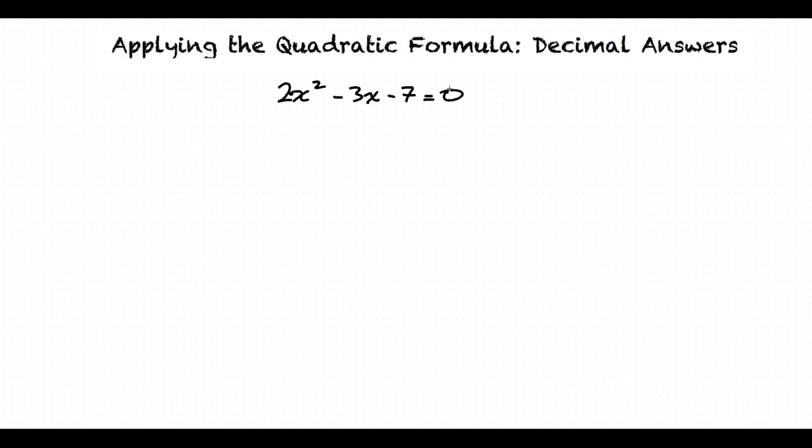So we'll have to use the quadratic formula, which is x = (-b ± √(b² - 4ac)) / 2a.